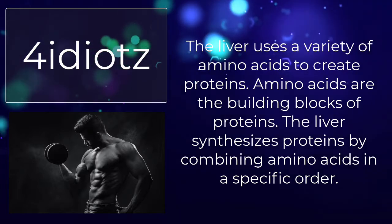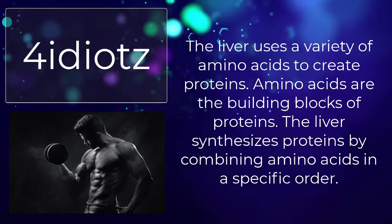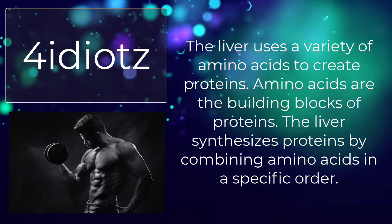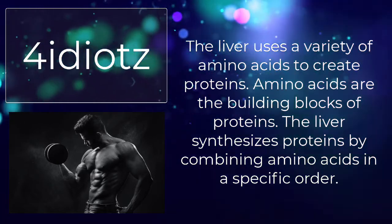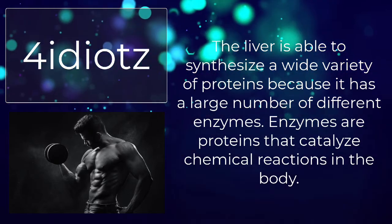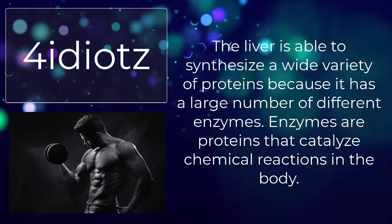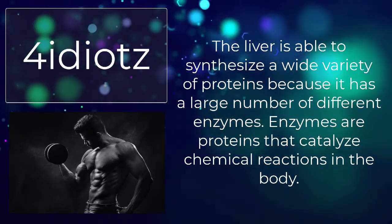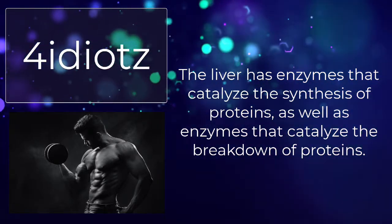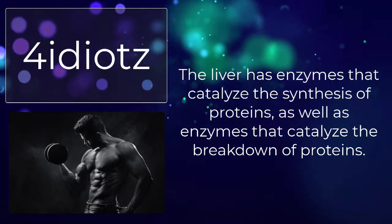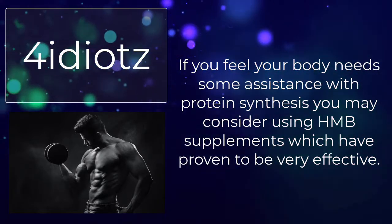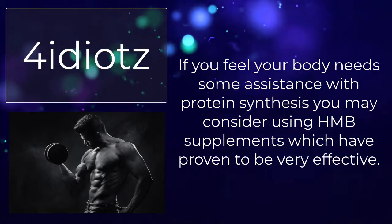The liver uses a variety of amino acids to create proteins — amino acids are the building blocks of proteins. The liver synthesizes proteins by combining amino acids in a specific order, and is able to synthesize a wide variety of proteins because it has a large number of different enzymes. These enzymes catalyze the synthesis as well as the breakdown of proteins.